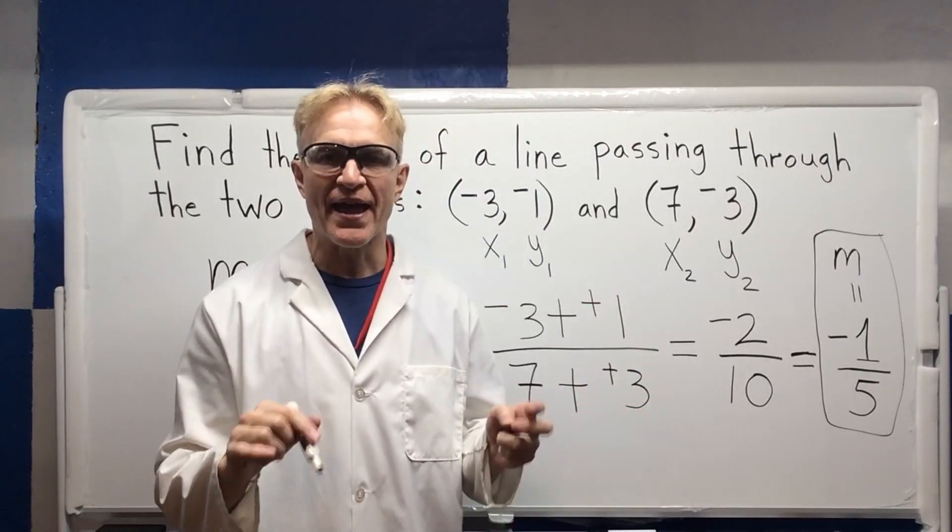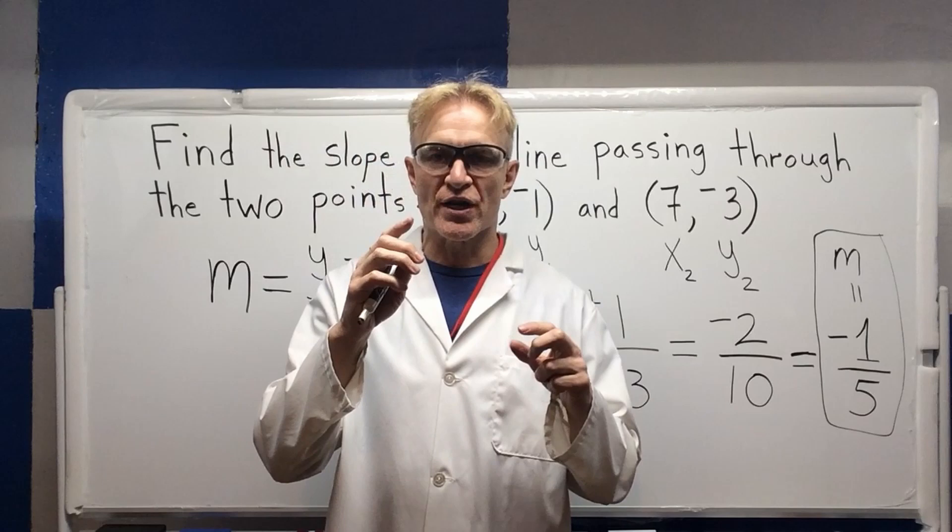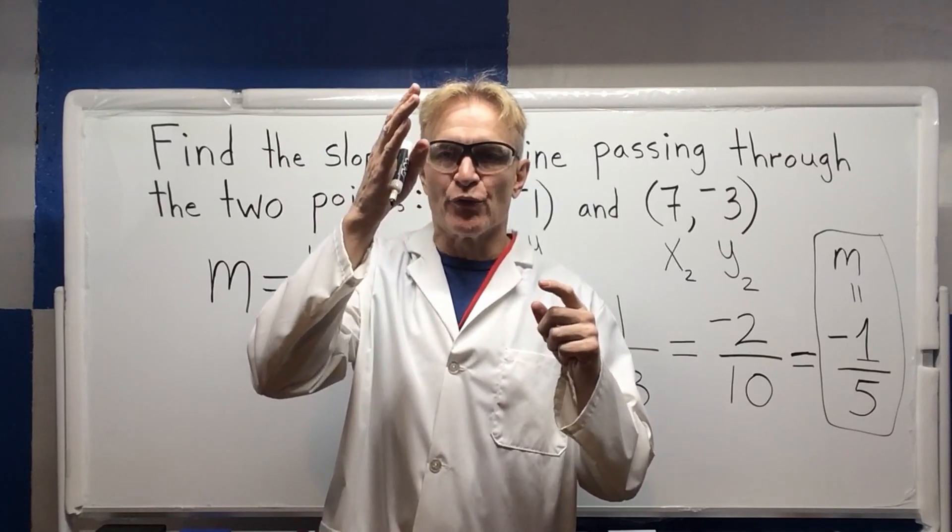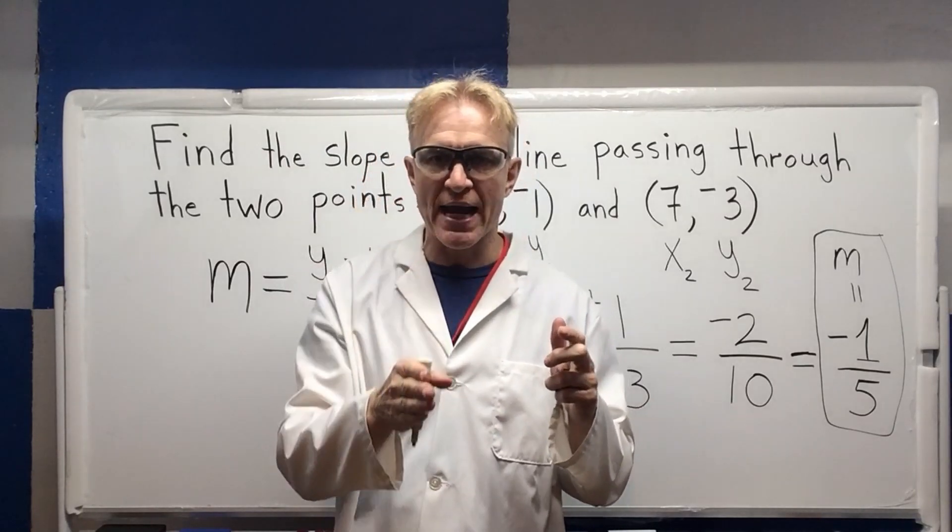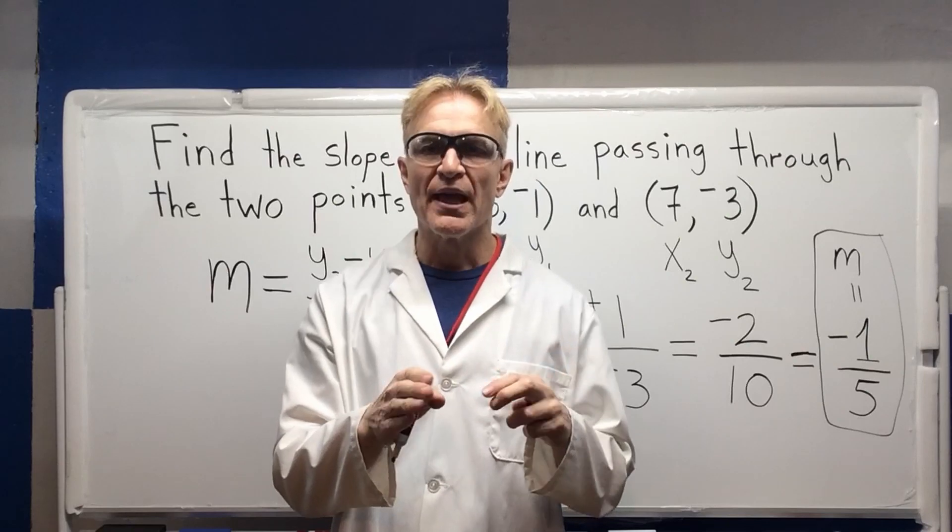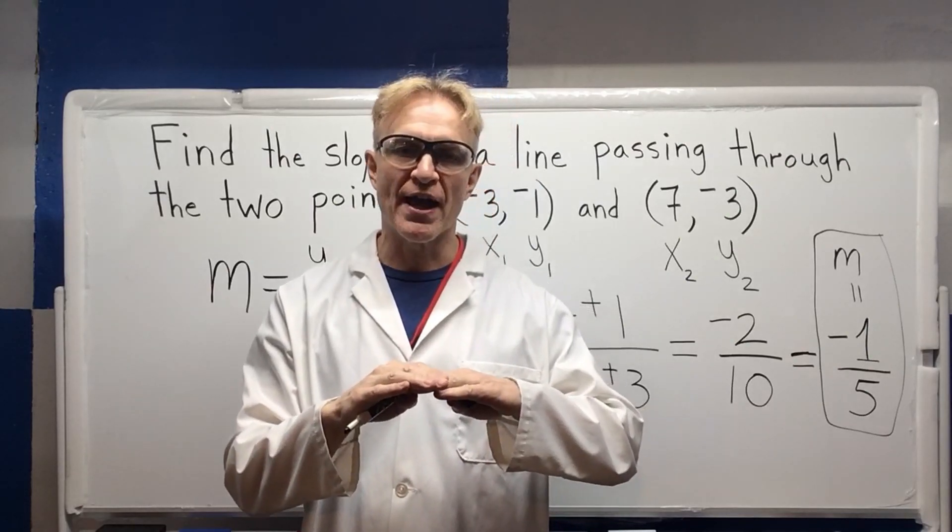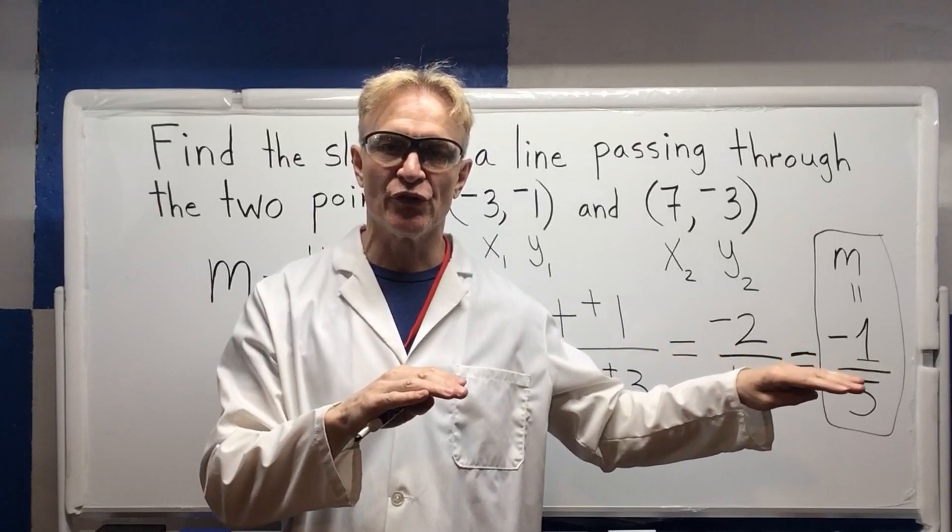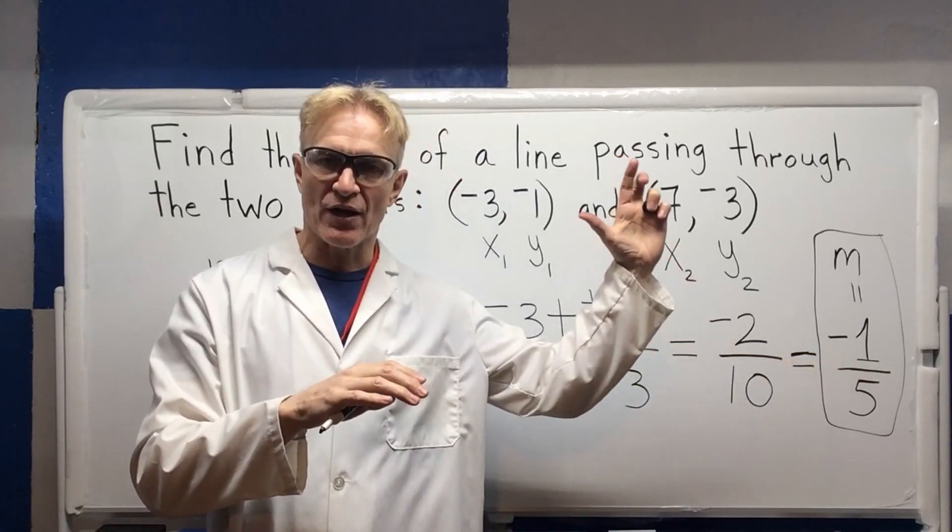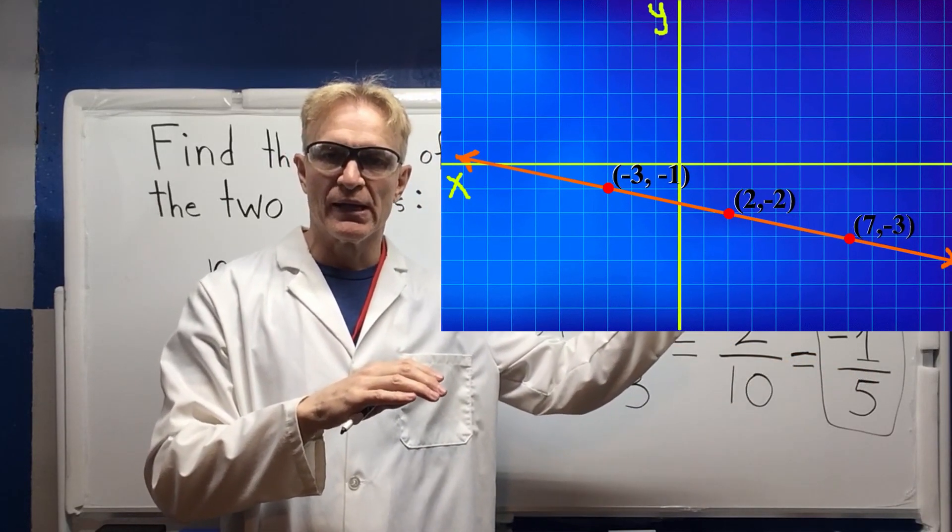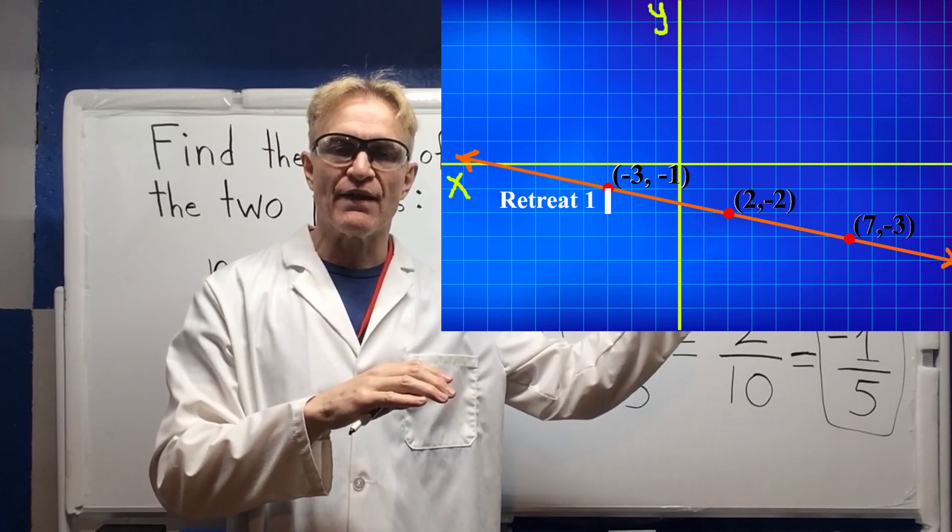So geometrically, that means that vertically, I'm going to retreat or move downward negative 1. And then I'm going to run 5 horizontally to the right. Looking at our graph up here. Down negative 1.